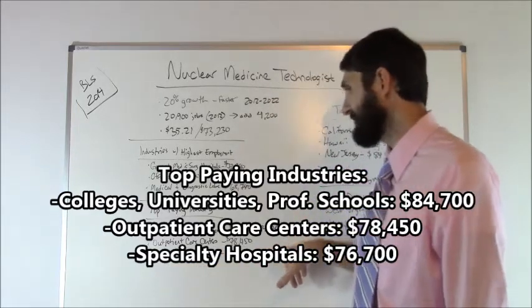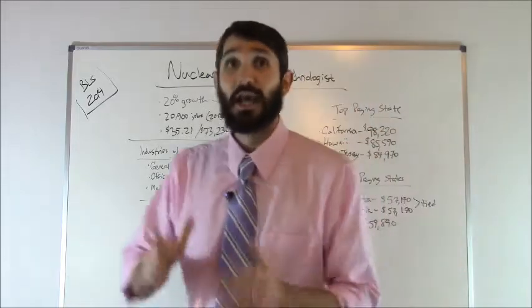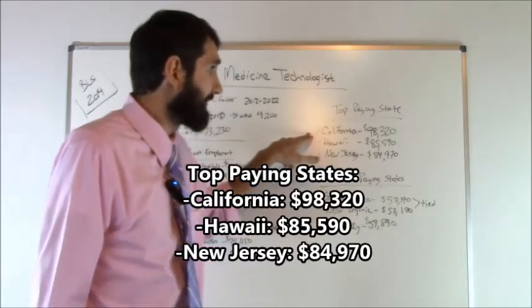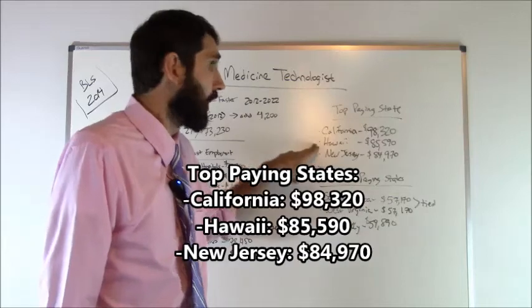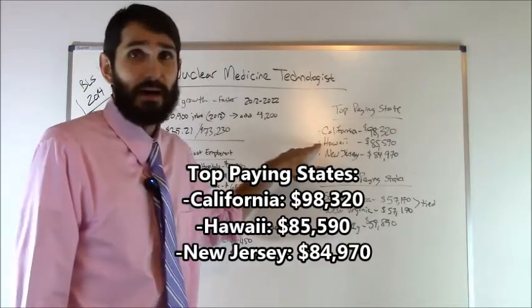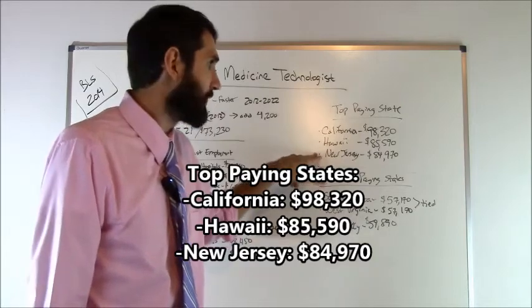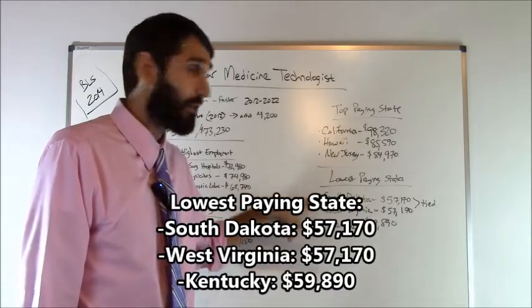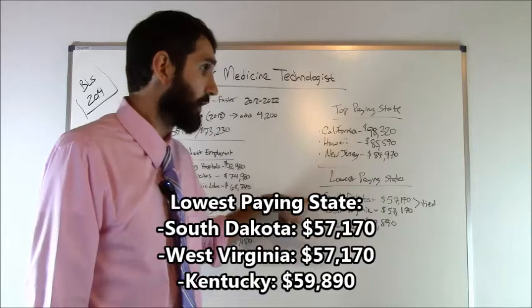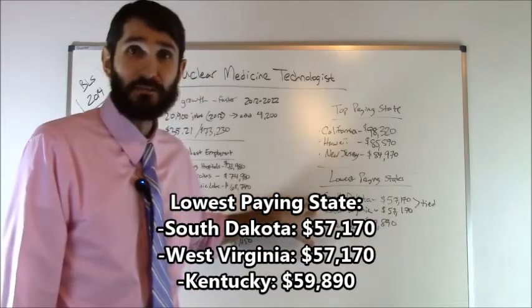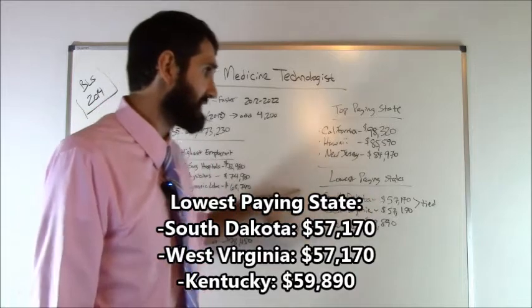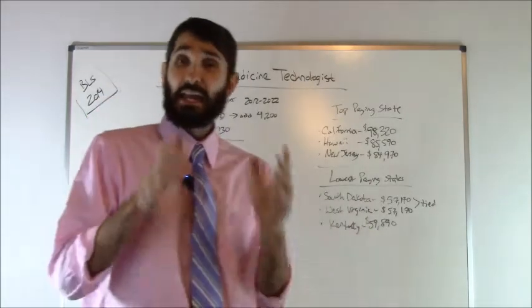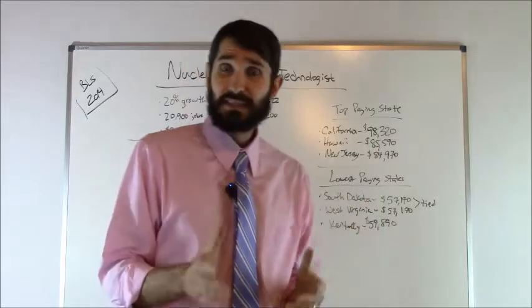Now let's talk about the states. What states paid the most money? Number one, California, $98,320 was the average there. Hawaii came in at number two, $85,590. And then New Jersey came in at number three, $84,970. What about the lowest paying state? South Dakota came in at the lowest at $57,170 and they actually tied with West Virginia. So South Dakota, West Virginia both had $57,170 as their average. And then Kentucky was next at $59,890.